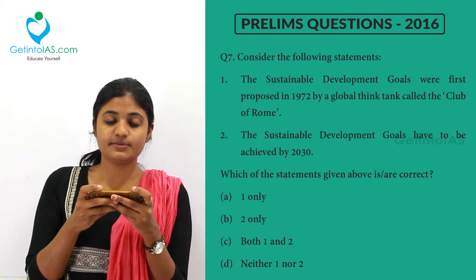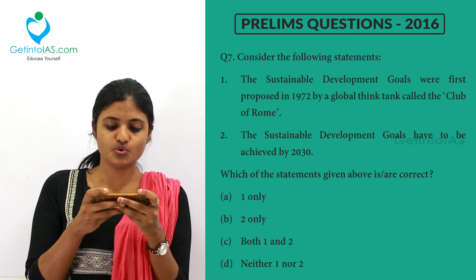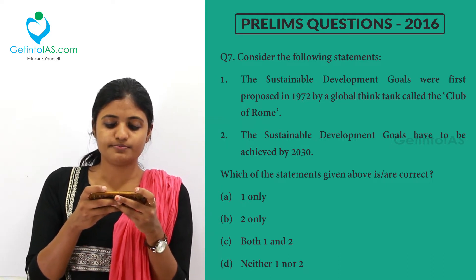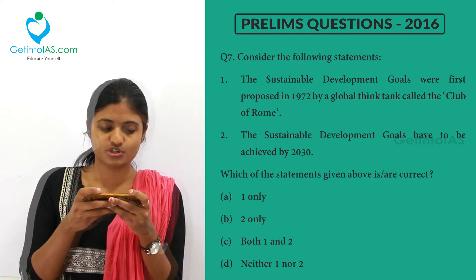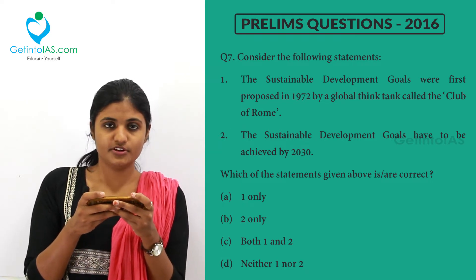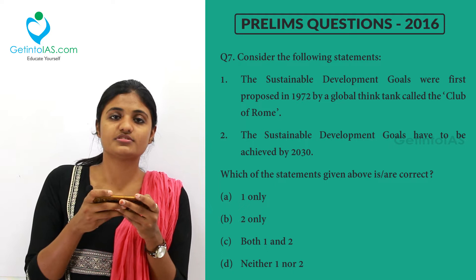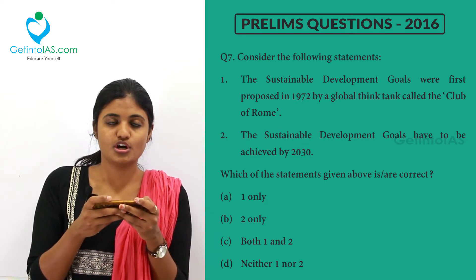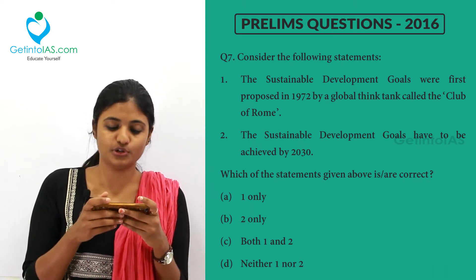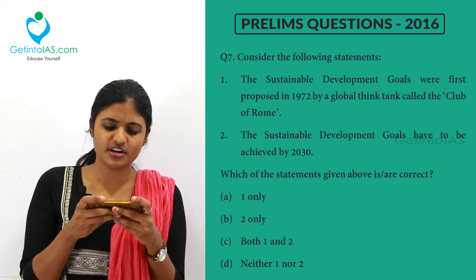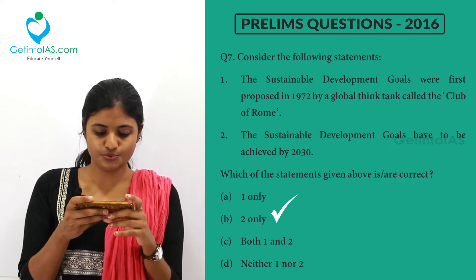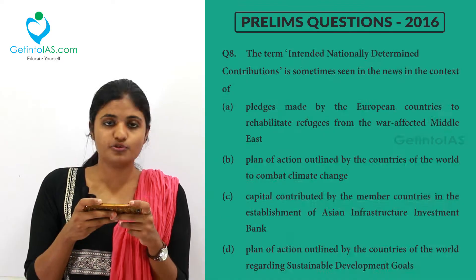Regarding Sustainable Development Goals: the first statement — that they were proposed in 1972 by the Club of Rome — is wrong. The SDGs replaced the Millennium Development Goals and are to be achieved by 2030, from 2016 onwards. There are 17 sustainable development goals in total, though India has adopted only 14. So only option 2 is the correct answer.